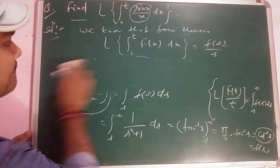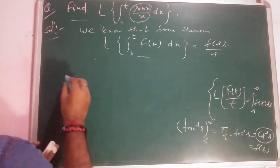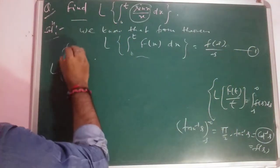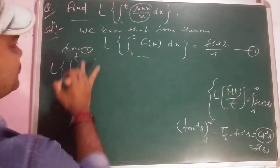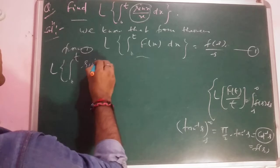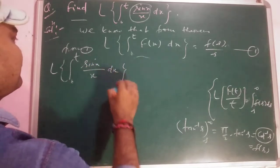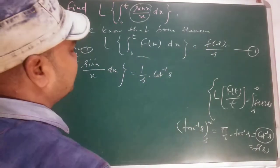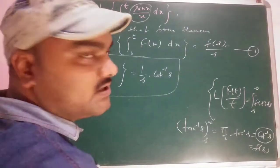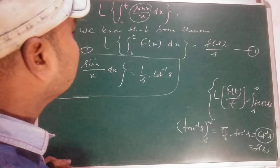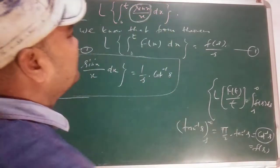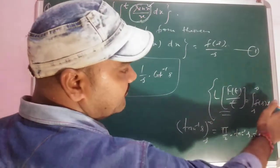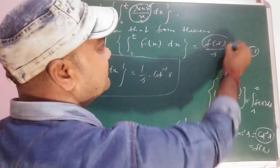So from equation 1, L{∫₀ᵗ (sin x / x) dx} = (1/s)·F(s), where F(s) = cot⁻¹(s). So the answer is (1/s)·cot⁻¹(s). This was quite easy — we just needed to take the Laplace of the function inside: first L{sin x}, then use the division-by-t formula, get F(s), and put it in the theorem.